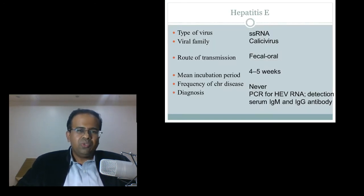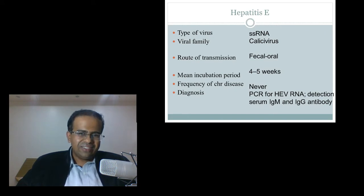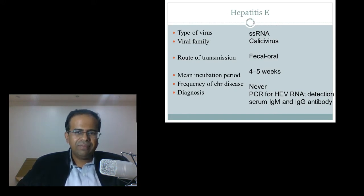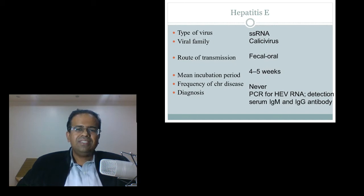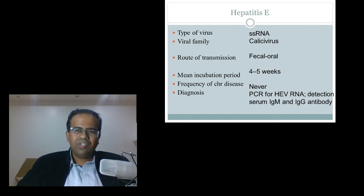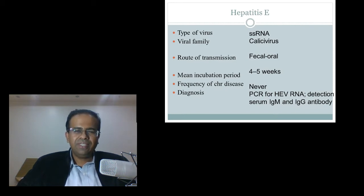So, what is this virus? It is a single-stranded RNA virus coming from the calicivirus family. Route of transmission is feco-oral. So, of the Hepatitis A, B, C, D, E spectrum, two are feco-orally transmitted: first is Hepatitis A and second is Hepatitis E.